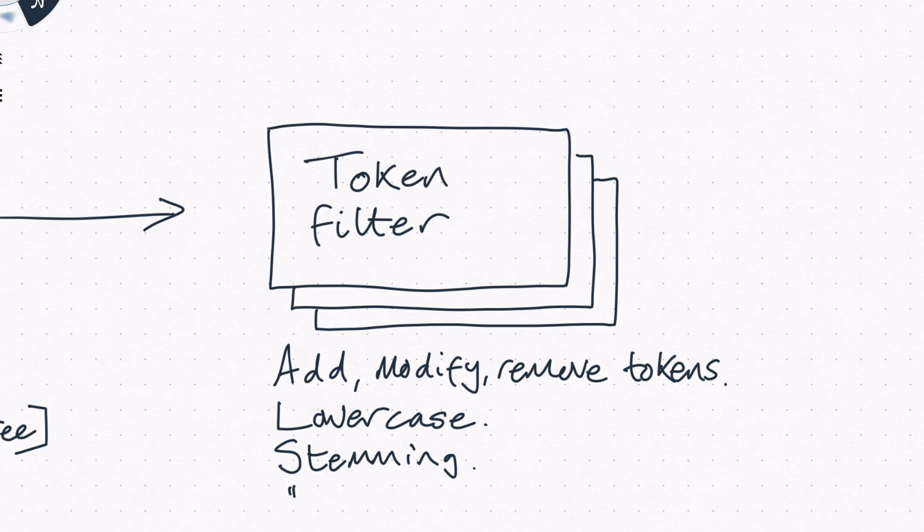In the dehumidifier review, for example, the word 'quickly' could be stemmed to just 'quick'. There are several analyzers you can use in Elasticsearch, and you're even able to craft your own by selecting the character filters, tokenizer, and token filters you want. Text fields, by default, use the standard analyzer.